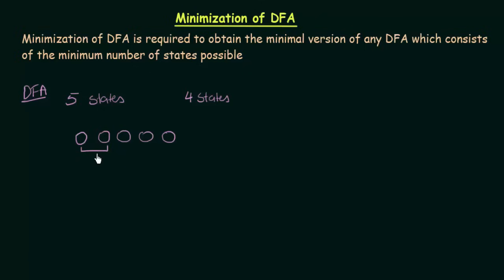And then, now you have 1, 2, 3, 4 states. So, that is how you can minimize it. But, how can you simply combine 2 states? You cannot just simply combine 2 states. There is a condition when you can combine 2 states. And what is that condition? 2 states can be combined only when these 2 states are equivalent.